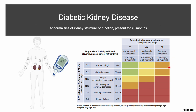Diabetic kidney disease is defined as abnormalities of kidney structure or function present for more than 3 months, with implications for health by diabetes complications. Chronic kidney disease is classified according to glomerular filtration rate in five categories and persistent albuminuria in three levels.